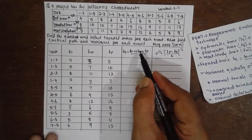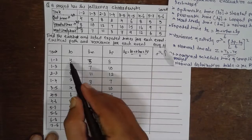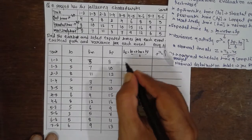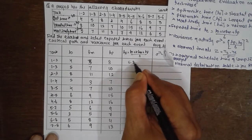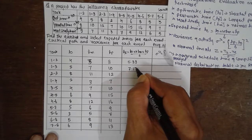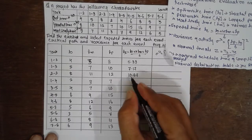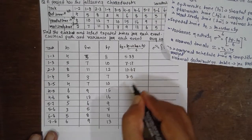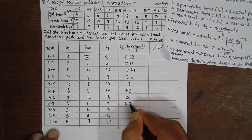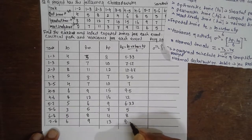To obtain the expected duration Te, substitute values in the formula. For example, (4 + 4×5 + 8) / 6 = 5.33. The Te values are: 5.33, 7.17, 10.67, 3.57, 9.5, 12, 6.33, 5, 8, 9.17.